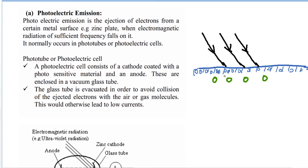On the surface we have particles with fast-moving electrons. These electrons are attracted towards the nucleus by a force of attraction. However, when radiation is incident onto this metal surface, it carries energy that is released and absorbed by some of these electrons.